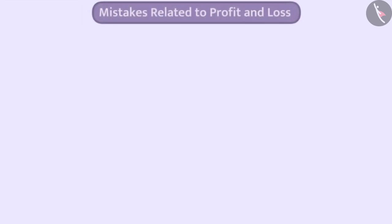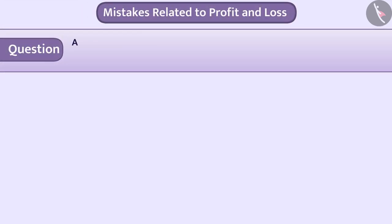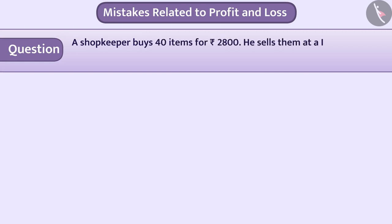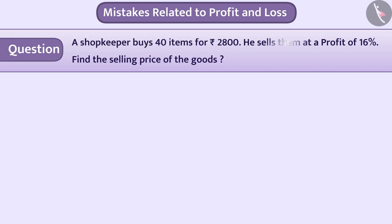Now let's see some mistakes. A shopkeeper buys 40 items for ₹2800 and sells them at a profit of 16 percent. Find the selling price of the goods. Children do not understand the information given in the question properly, and because of this they make some mistakes. Let us understand these mistakes.